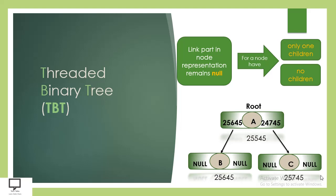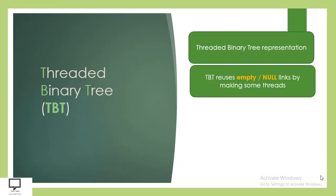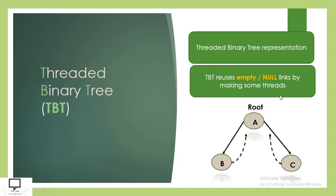So what is the threaded binary tree? In the threaded binary tree, we replace all the null values with threads. A threaded binary tree reuses the empty or null links by making some threads. For your reference, in the diagram, A is the root node, its left child is B and its right child is C. The null pointers are replaced with threads, which are represented by dotted arrows and always grow from the lower level to the higher level — from the child node to the parent node.